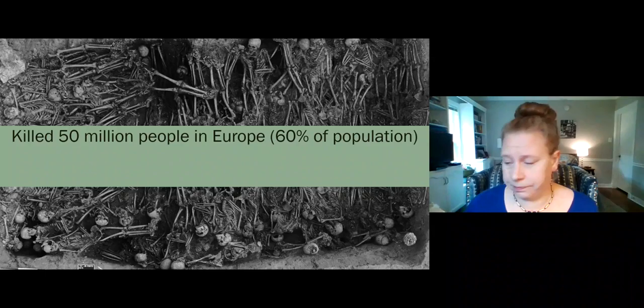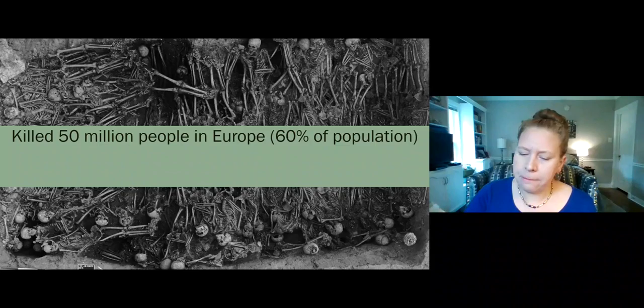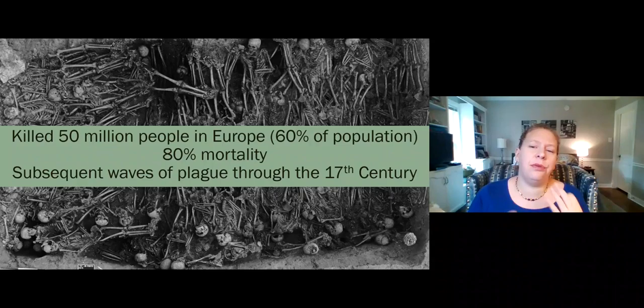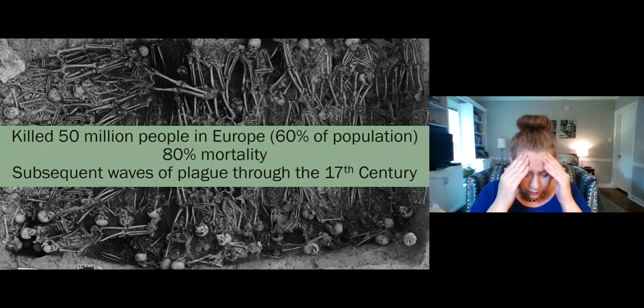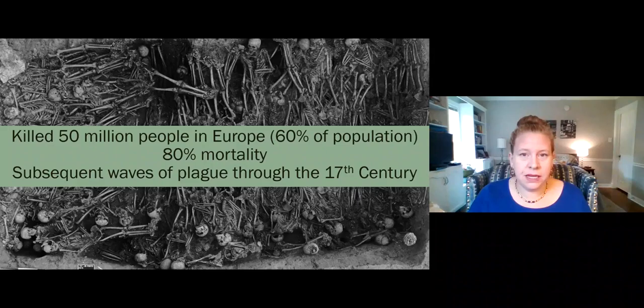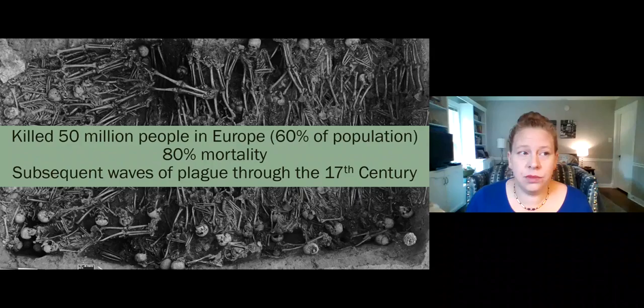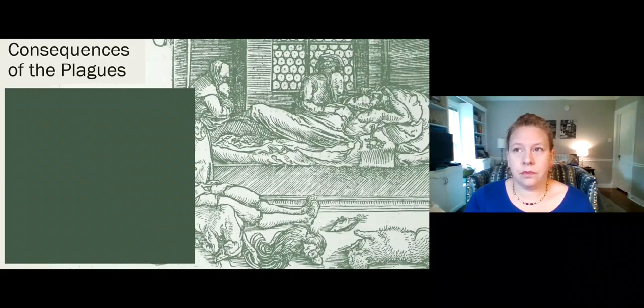The Black Death killed 50 million people in Europe — about 60% of the population in about five or six years. Very fast. It had an 80% mortality rate, so if you got sick, you only had a one-in-five chance of survival. There were subsequent waves coming back through Europe for hundreds of years. The subsequent waves didn't seem as bad as the first, but still killed thousands and thousands of people. This is a mass grave they recently uncovered — you couldn't keep up with how many dead people there were.